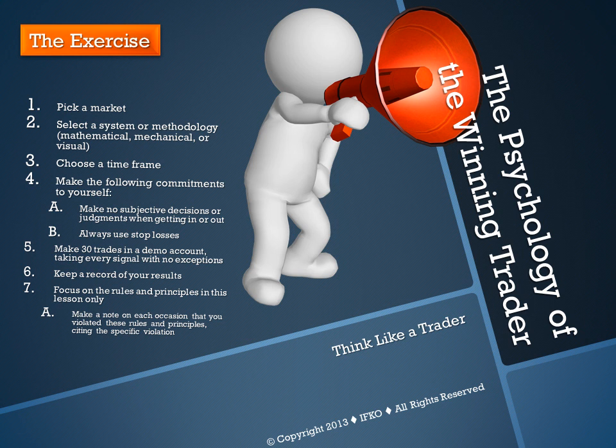After you have chosen a set of market variables or a system that gives you an edge, the next consideration is trade entry. The variables you use to define your edge have to be absolutely precise, and they are in all three of those systems I just mentioned. The system has to be designed so that it does not require you to make any subjective decisions or judgments about whether your edge is present. If the market is aligned in a way that conforms with the rigid variables of your system, then you have a trade. If not, you don't have a trade.